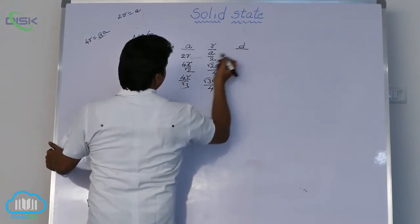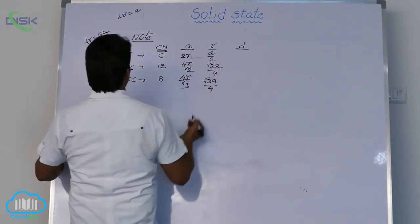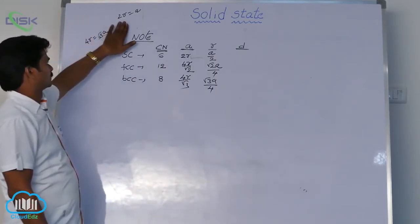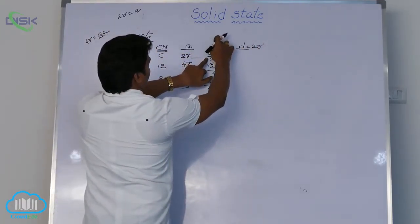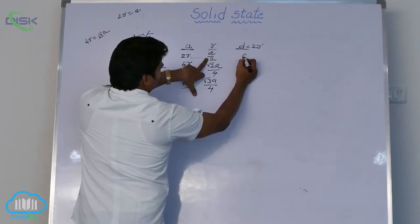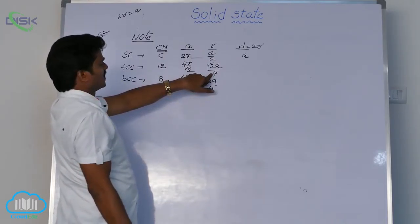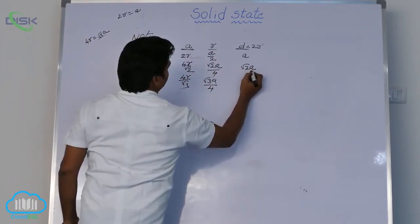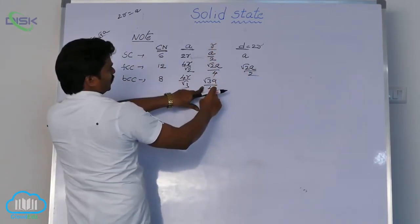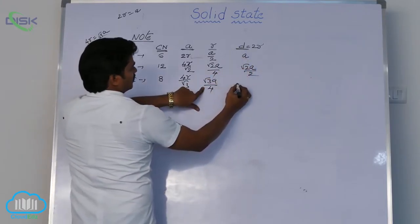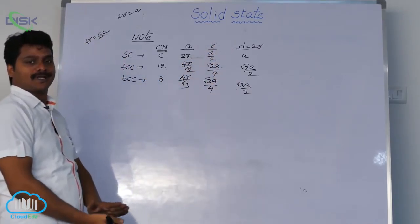Similarly, nearest neighbor's distance D is nothing but 2R, so D is equal to 2R. For simple cubic, R equals A by 2, so 2R equals A. For FCC, R equals root 2A by 4, so 2R equals root 2A by 2. For BCC, R equals root 3A by 4, so 2R equals root 3A by 2. These are the formulae related to nearest neighbor's distance.